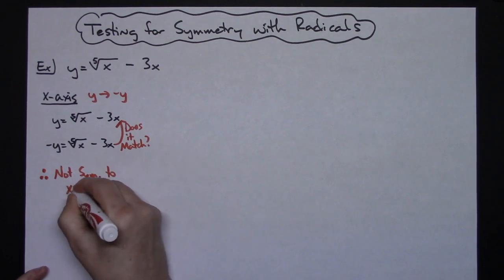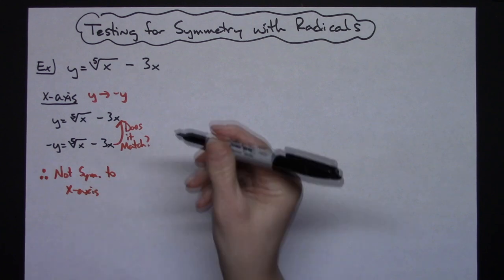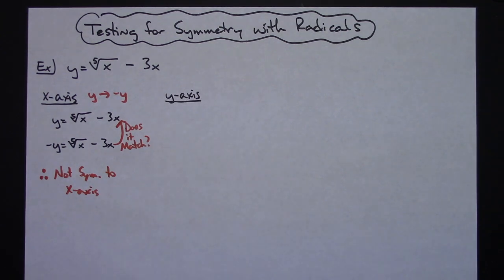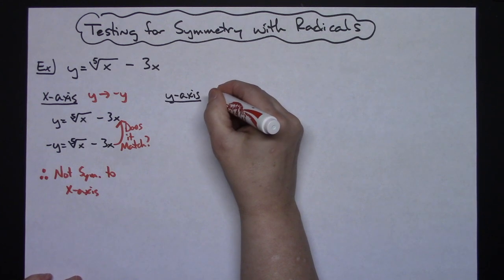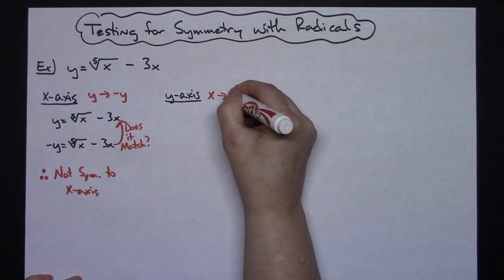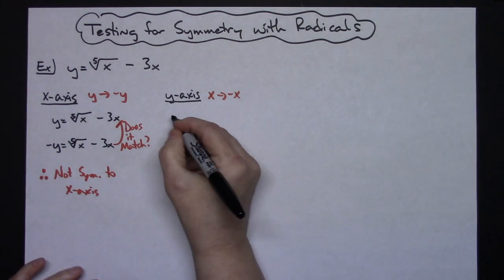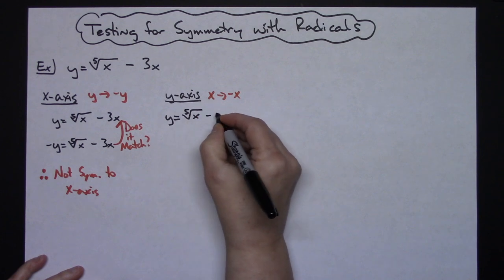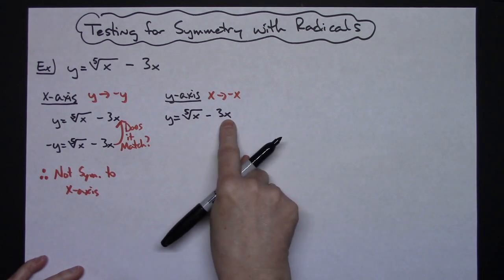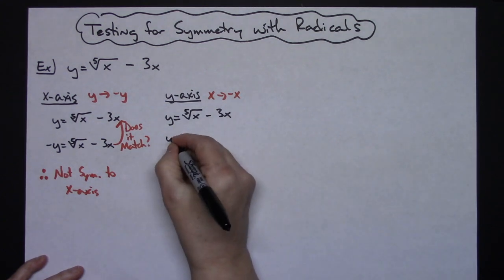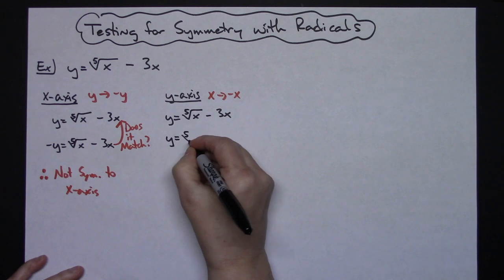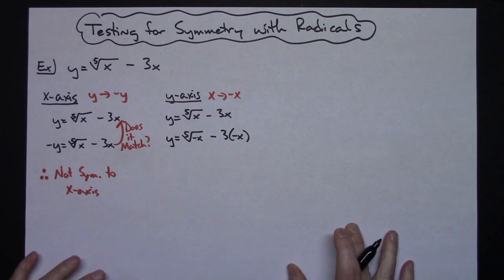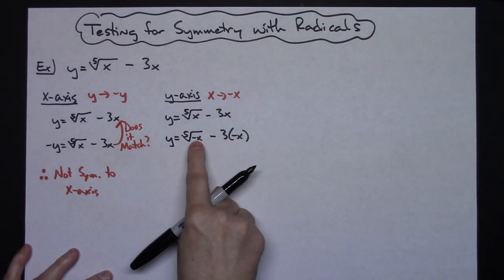Now let's test for the y-axis. To test for symmetry around the y-axis, take every x in your equation and replace it with a negative x. Writing down the original equation: y equals the fifth root of x minus 3x. Now each x gets replaced with negative x, giving us: y equals the fifth root of negative x minus 3 times negative x.